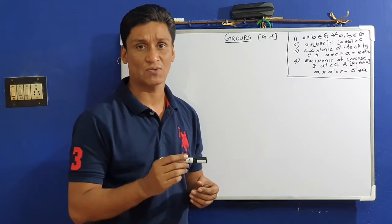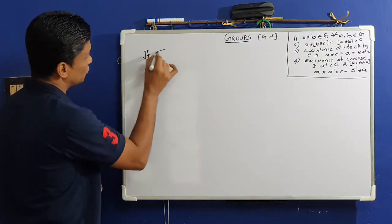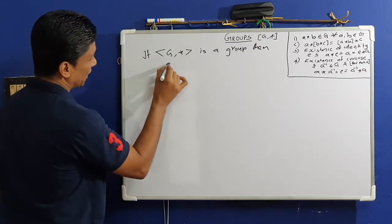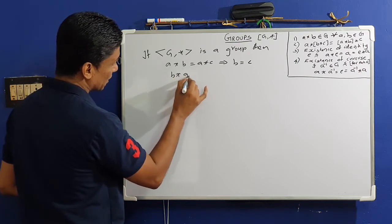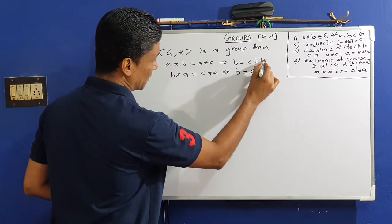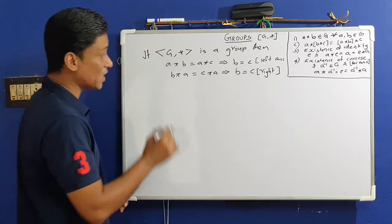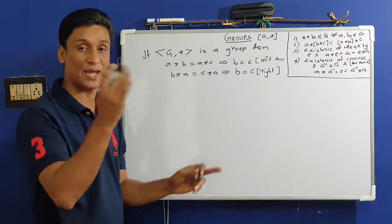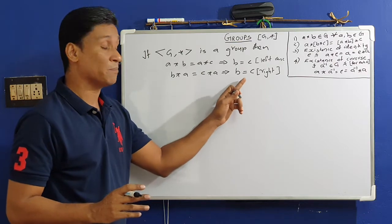If (G, ★) is a group, then both left and right cancellation laws hold. Left cancellation: A★B = A★C implies B = C. Right cancellation: B★A = C★A implies B = C. These are very basic results that hold in every group.